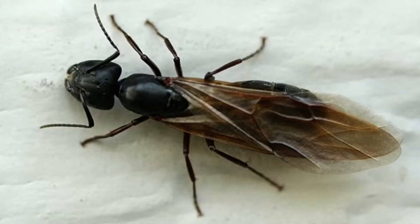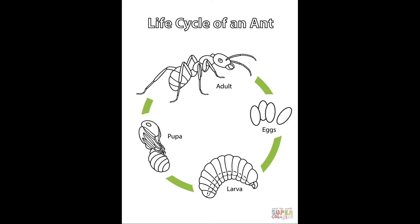An ant colony begins with the queen. A young queen is born in one colony but leaves that colony to start her own. Her wings carry her into the air to find a mate. Once she mates, she sheds her wings and immediately finds a nesting place underground. There, she builds a chamber and seals herself inside to lay her eggs. When ant larvae hatch, the queen cares for the first brood herself, feeding them with her own saliva as they change from worm-like larvae into pupae, and finally adults. The queen does not leave the nest this whole time, getting nutrition from her now useless wing muscles in order to survive.